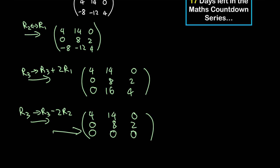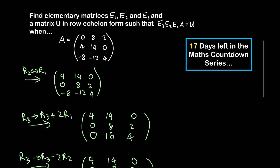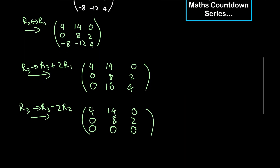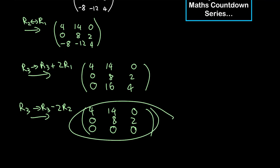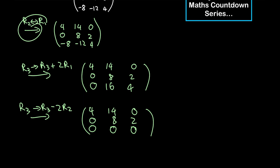The resulting matrix, with rows 4, 14, 0; then 0, 8, 2; then 0, 0, 0, is now in row echelon form. The zero row is at the bottom, and the two pivots satisfy the staircase condition. We can safely say this is our matrix U. We performed the row reduction through three steps, so now we need to find the corresponding elementary matrices E1, E2, and E3.